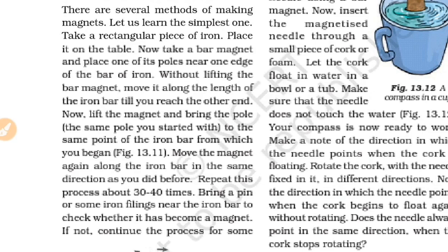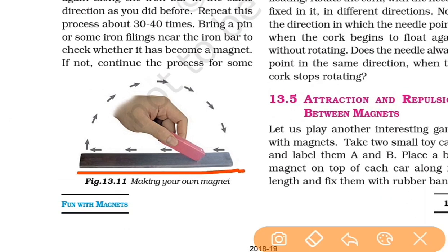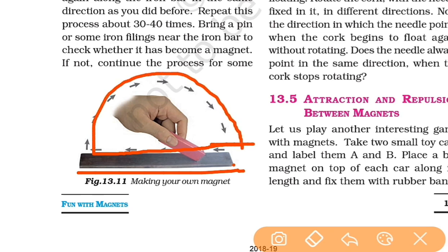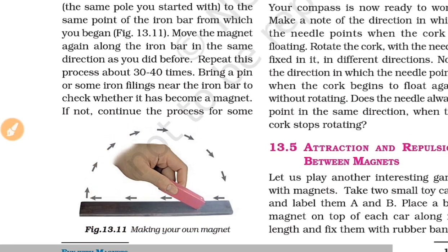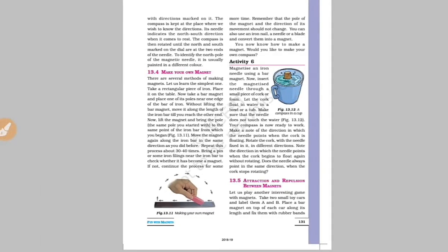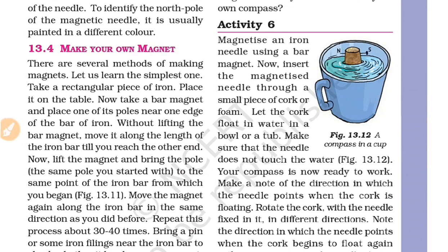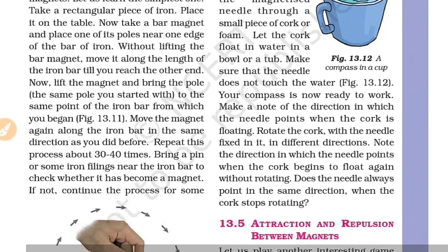Next, using the magnet to produce magnetic properties. You can use an iron content material and stroke it with a magnet in one direction 30 to 40 times. This way, you can produce a magnet at home. You can also produce a compass at home using a needle magnetized this way.